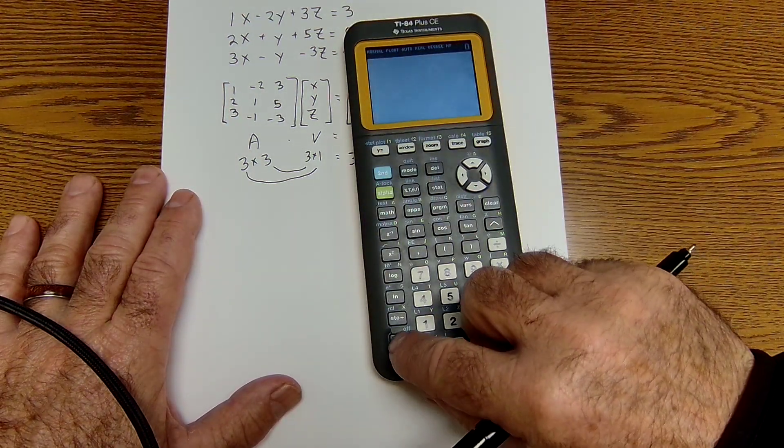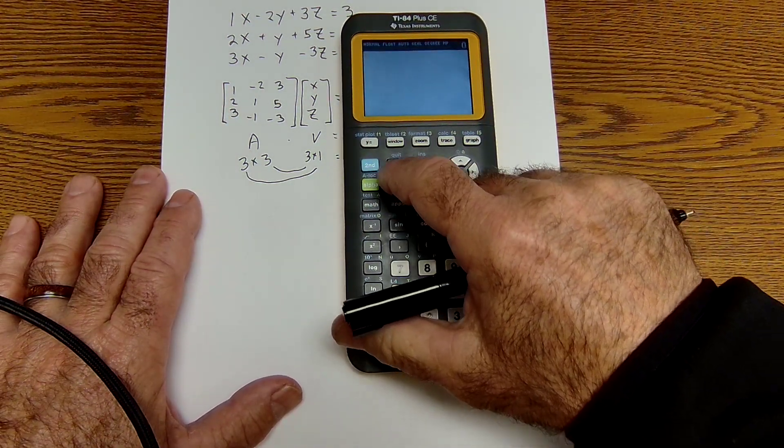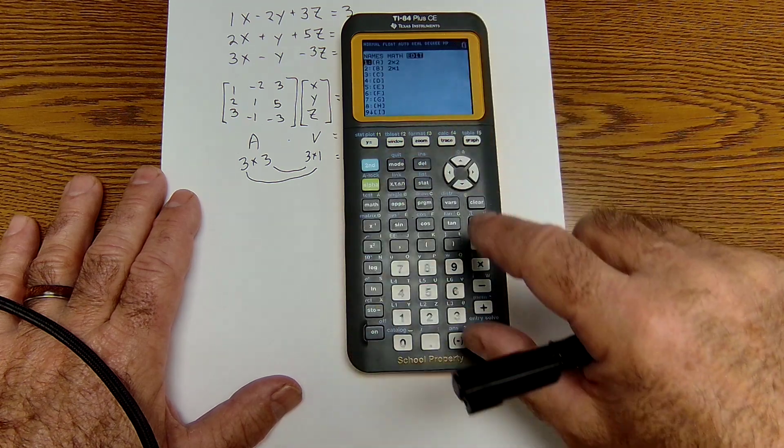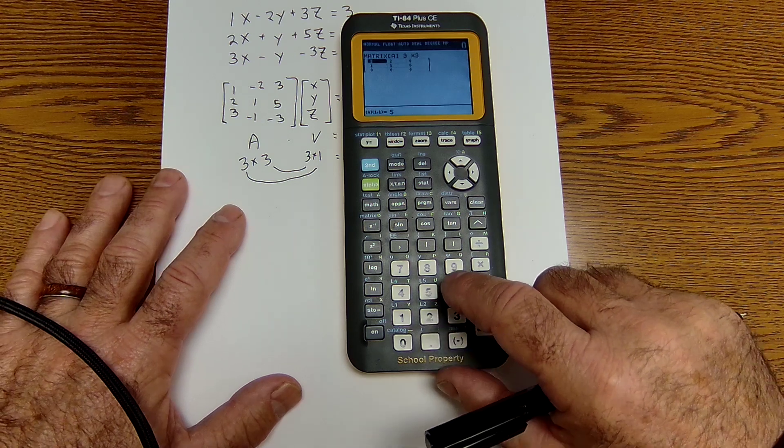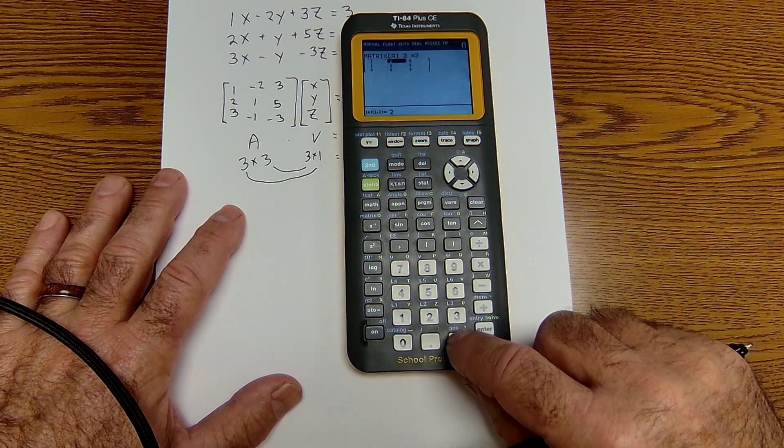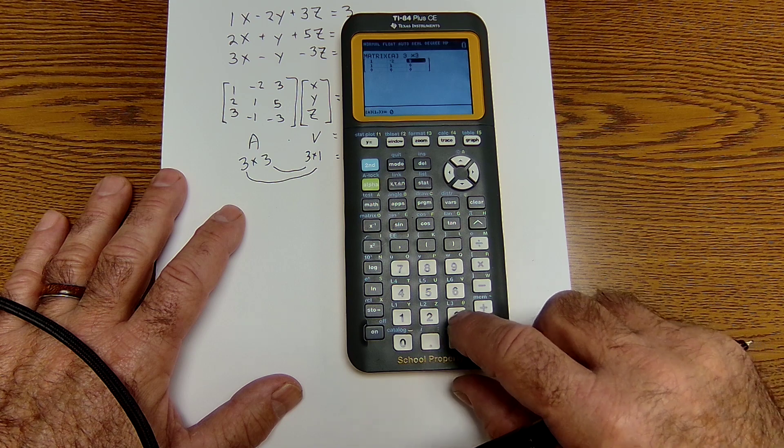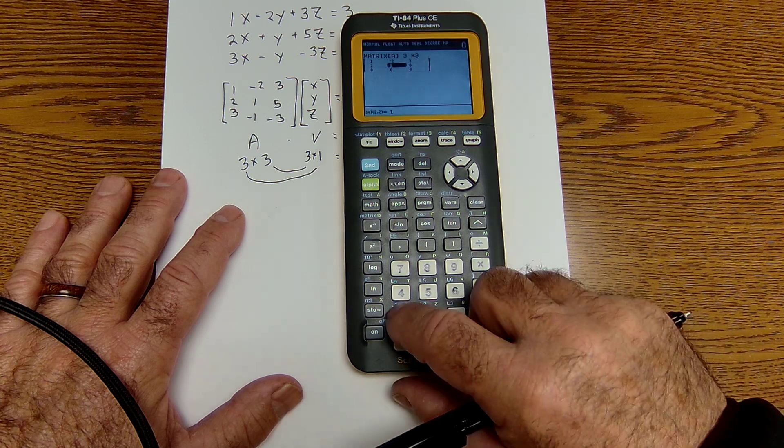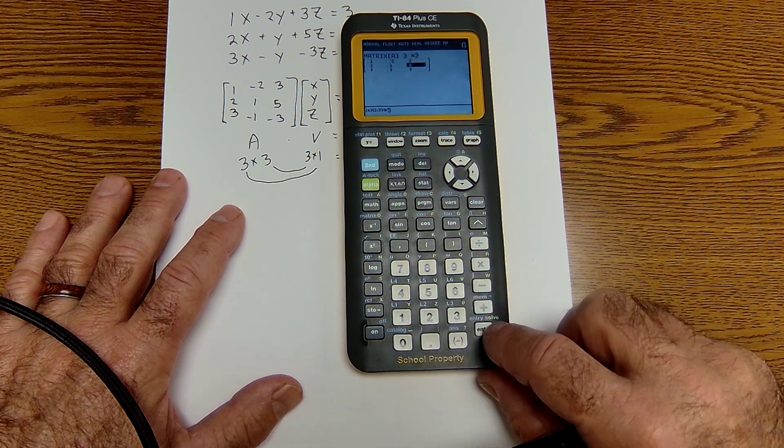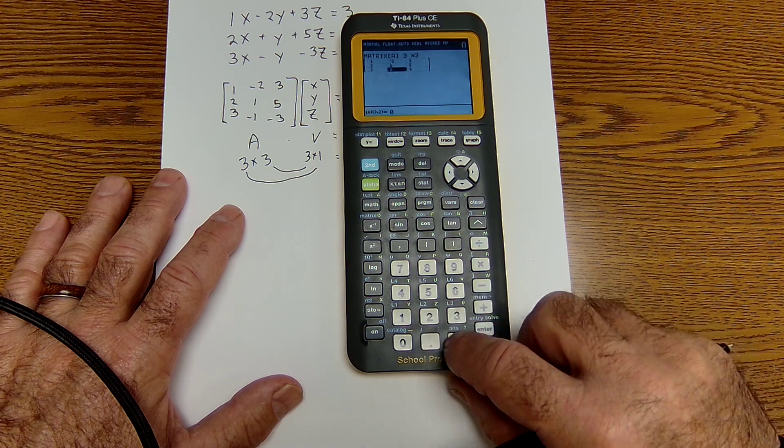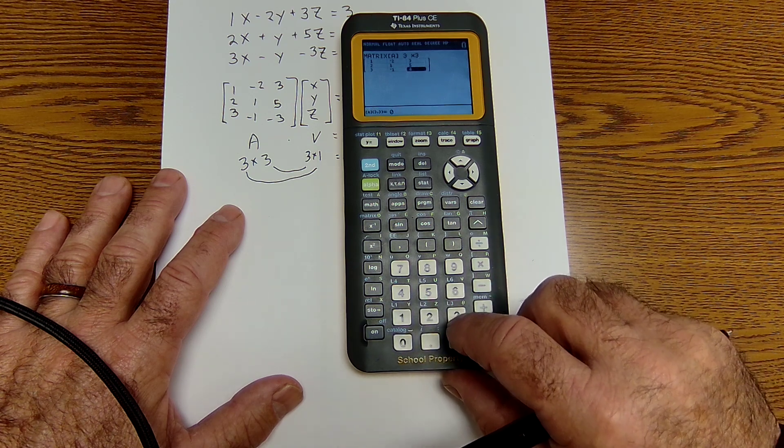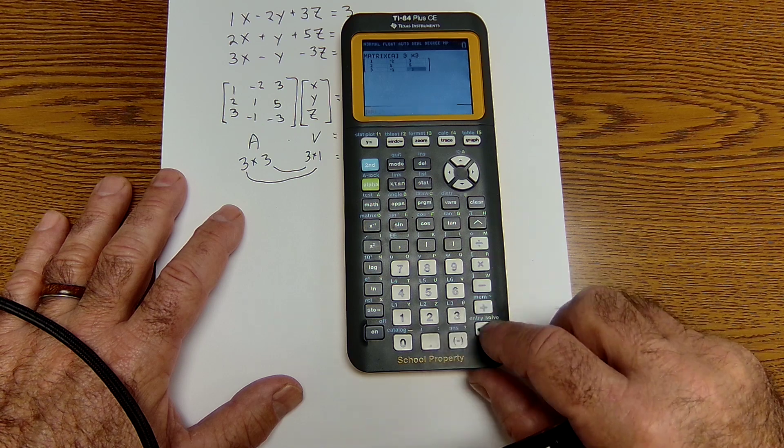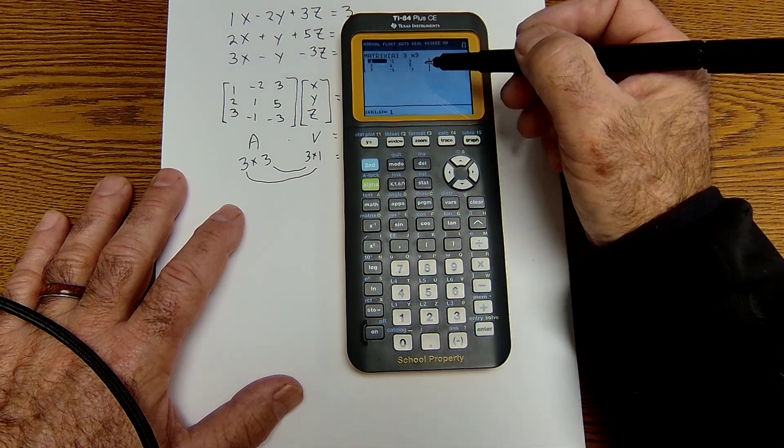On my graphing calculator, I'm going to go to matrix. I want to edit it, enter. It's a 3 by 3, and then the elements are 1, using the negative button, negative 2, 3, 2, 1, 5, 3, negative 1, negative 3. So I have that matrix entered into my calculator.